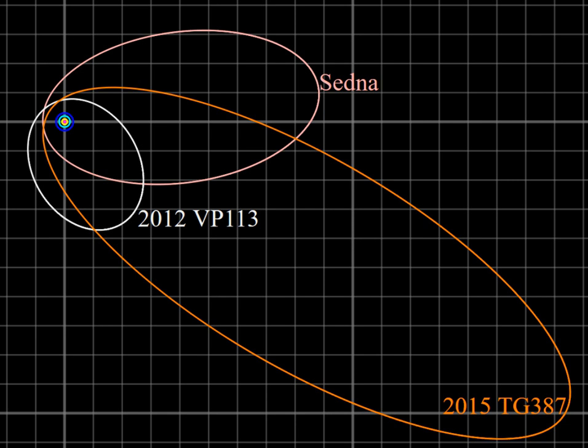A sednoid is a trans-Neptunian object with a perihelion greater than 50 AU and a semi-major axis greater than 150 AU. Only three objects are known from this population: 90,377 Sedna, 2012 VP113, and 2015 TG387, all of which have perihelia greater than 64 AU, but it is suspected that there are many more. These objects lie outside an apparently nearly empty gap in the solar system starting at about 50 AU, and have no significant interaction with the planets. They are usually grouped with the detached objects.